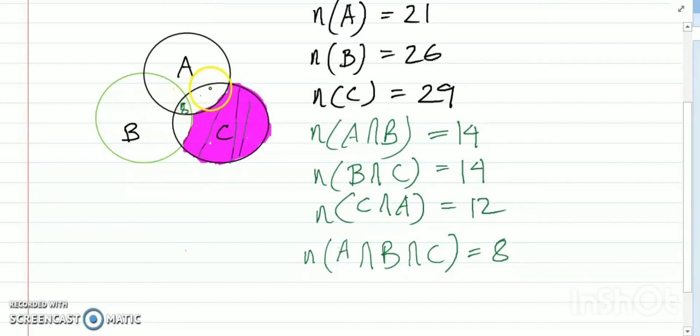So with 8 here, this portion is 6, because 8 plus 6 equals 14. For this portion B∩C, you get also the same. For C∩A, this portion is 4.